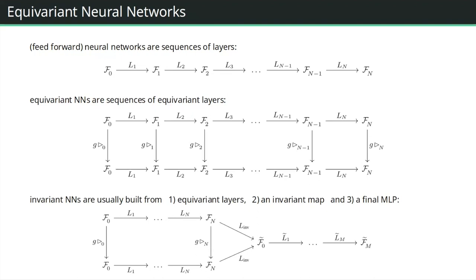An important clarification: in an equivariant map, it is always the same group element acting, but via different representations on different feature spaces.